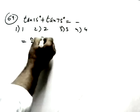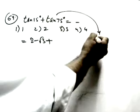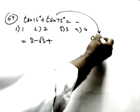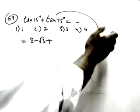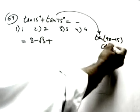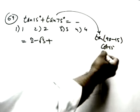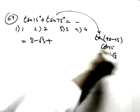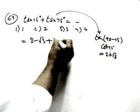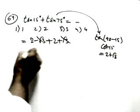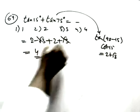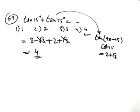tan 15° = 2 − √3. And tan 75° = tan(90°−15°) = cot 15° = 2 + √3. So tan 15° + tan 75° = (2−√3) + (2+√3) = 4.